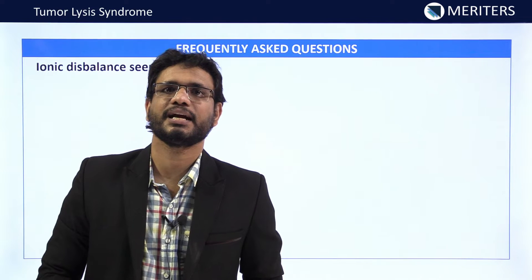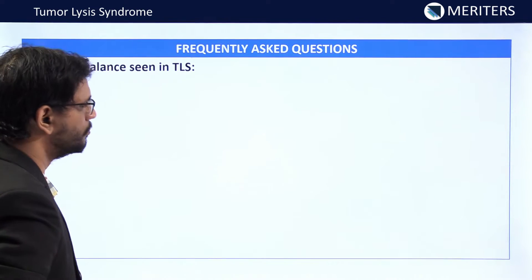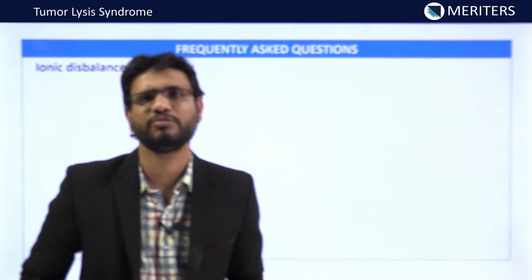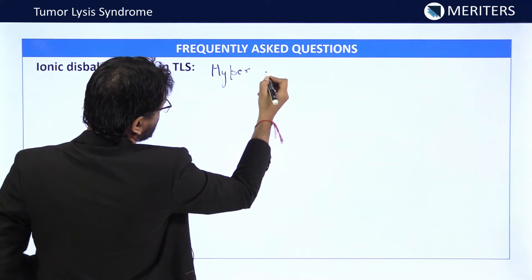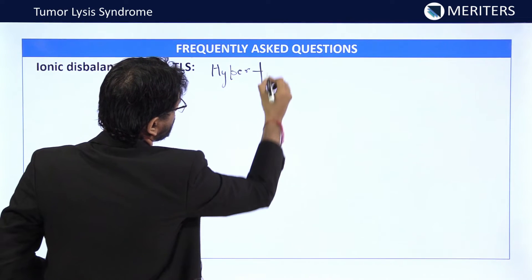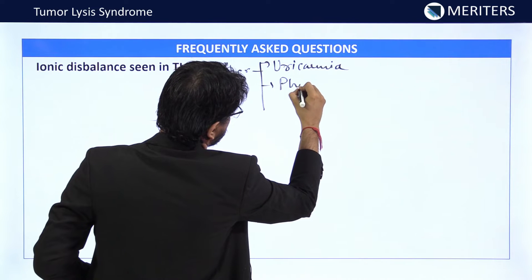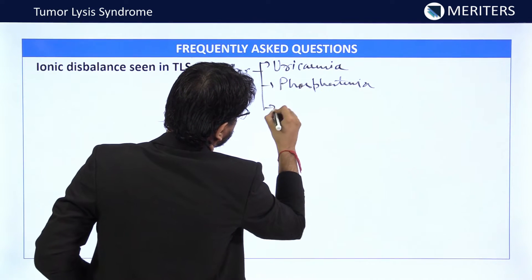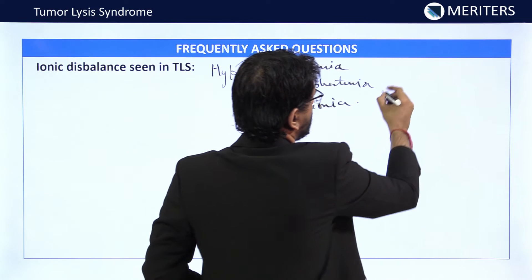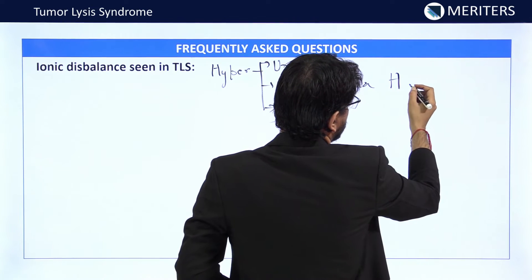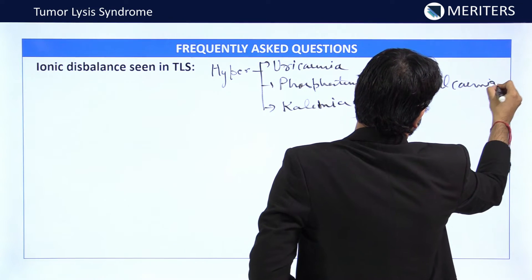FAQ: Ionic imbalances seen in tumor lysis syndrome. There will be an increase in plasma uric acid — hyperuricemia; hyperphosphatemia; hyperkalemia; and a decrease in plasma calcium — hypocalcemia. These four ionic imbalances are the key abnormalities of TLS.